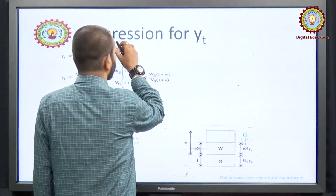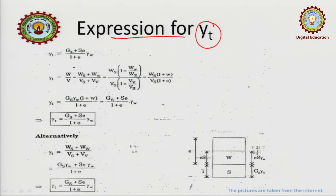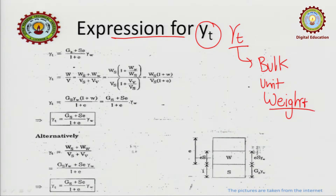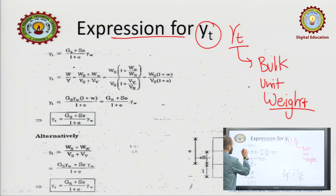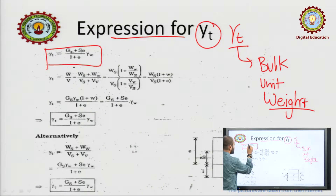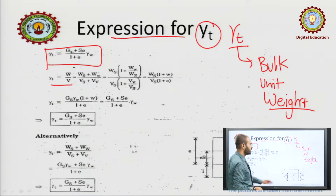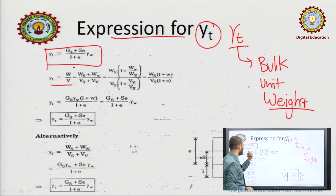First of all, what is gamma_t? The expression for gamma_t — it is actually bulk unit weight. What is bulk unit weight? This is bulk unit weight. We know that gamma_t is W by V — total weight upon total volume.